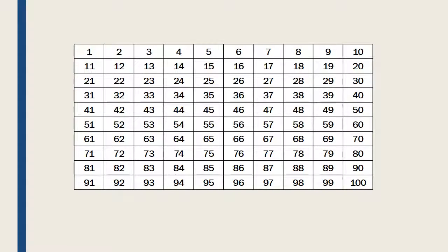This is the number 30. This is a hundreds chart. A hundreds chart shows all the numbers in order from 1 to 100. The arrow points to the number 30 on the hundreds chart. This is the number 30 on a hundreds chart.